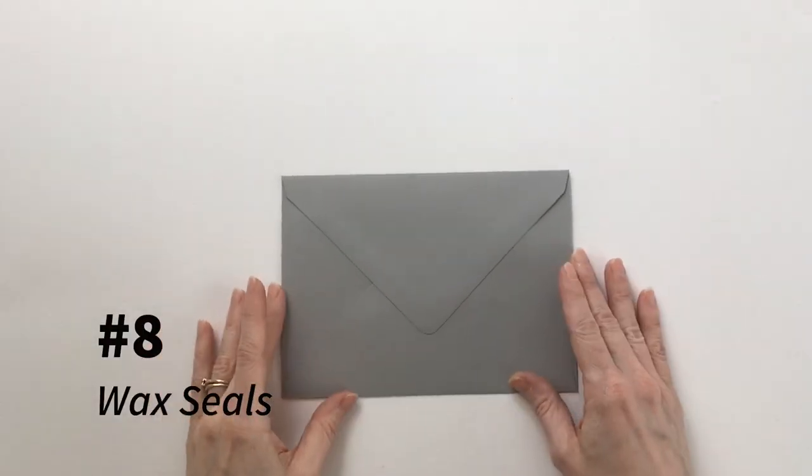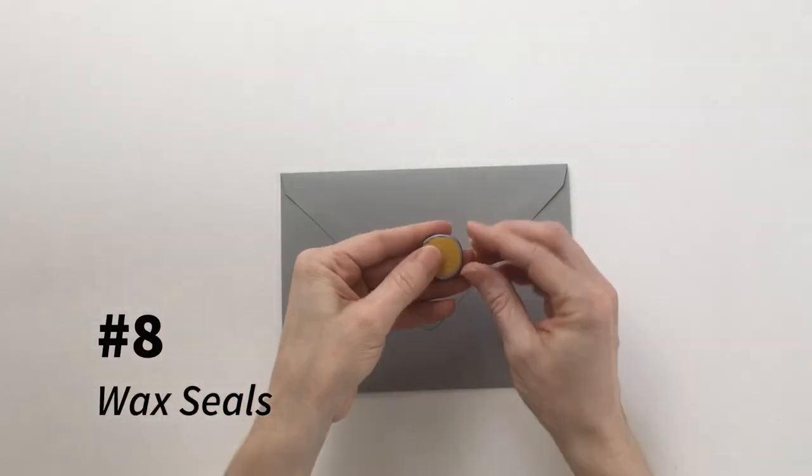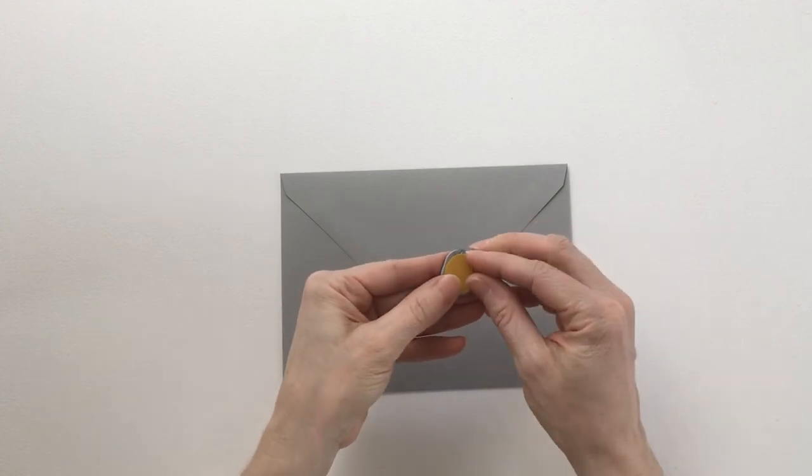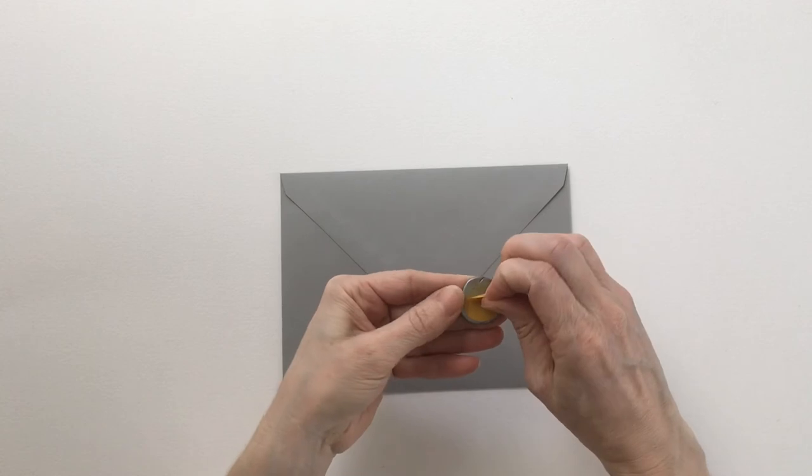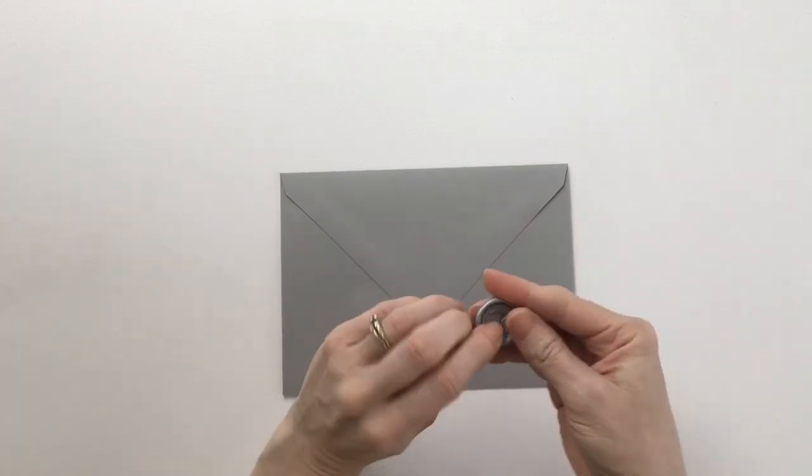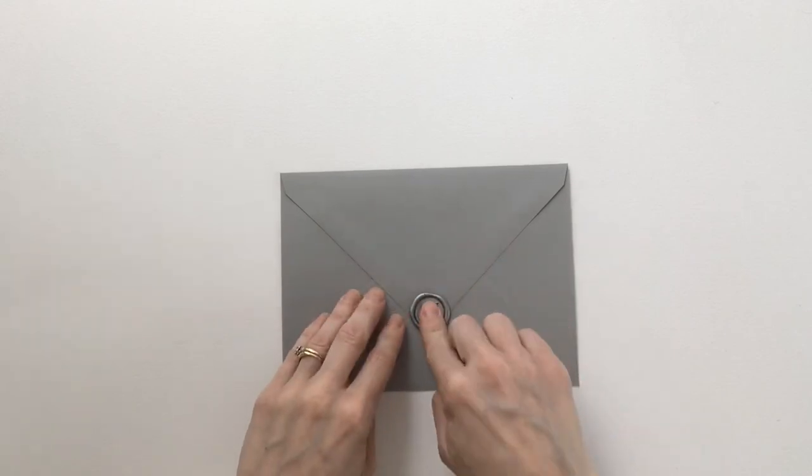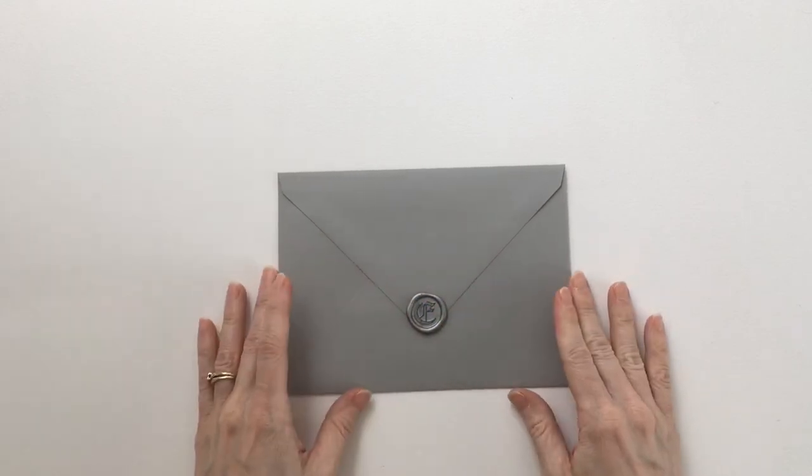If you have ordered our wax seals, they will have a pre-applied strong bond adhesive on the back like this. So when you apply them, simply peel off the sticky backing, make sure it's straight, and just press firmly at the bottom of the flap there and you are good to go.